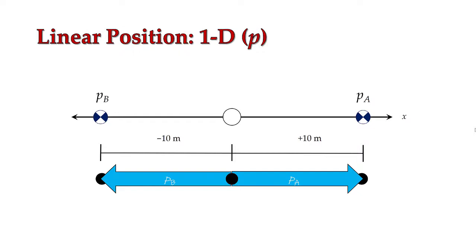Remember that our first kinematic variable was position, and that is simply your location within a frame of reference. In one dimension, that position is simply going to be located along an axis, which is designated by your direction. That can either be in the positive direction or in the negative direction, but it was still going to be located along that one particular axis.